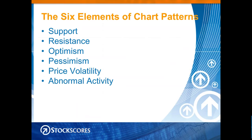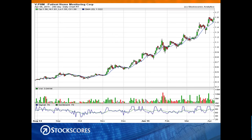What are the six elements of chart patterns? They are: support, resistance, optimism, pessimism, price volatility, and abnormal activity. We use those to gauge where a stock is likely going to go in the future. Once you understand these six things, you can read a company's future in five or ten seconds, because all of these things and how they interrelate really have predictive value. Whether you're a day trader or a long-term investor doing five trades a year, these concepts help you focus on winning stocks and avoid the lousy ones.